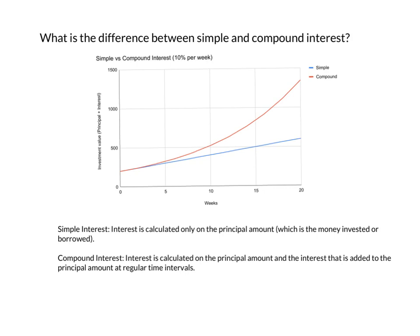Here are two definitions. Simple interest is calculated only on the principal amount. Whereas compound interest is calculated on the principal amount and on the interest that has been added to the principal amount, and it's calculated at regular time periods.